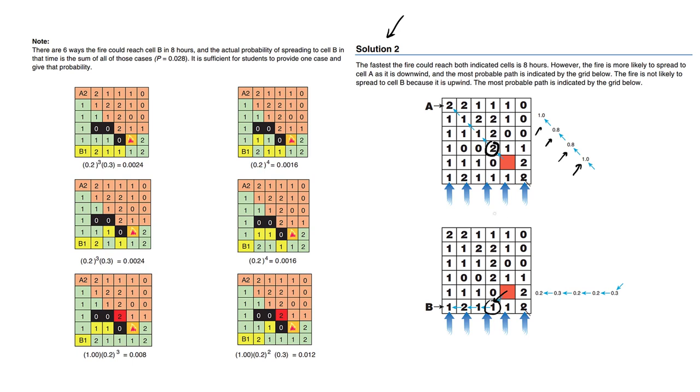So this exemplar, even though it's quite simplistic in the approach of the answer, which is just only one possible path, the truth is that there are six possible ways the fire could reach the cell within eight hours. So imagine the cell here is trying to reach B. It could go this way and it results in a certain probability.